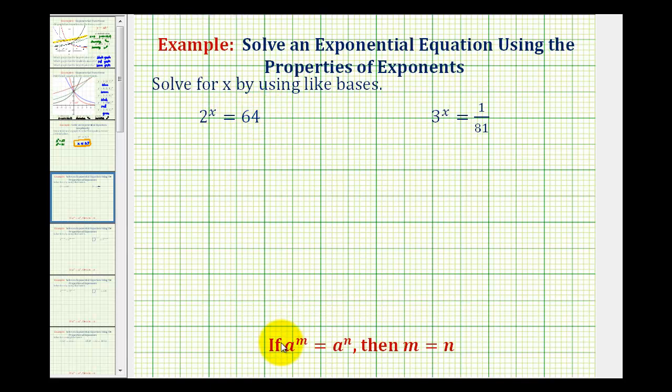In general, if we have a raised to the power of m equals a raised to the power of n, then m equals n. Meaning if the bases are the same and they're equal to each other, the exponents must also be equal.